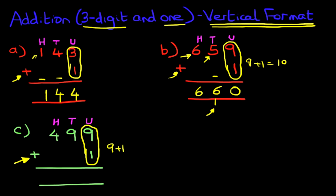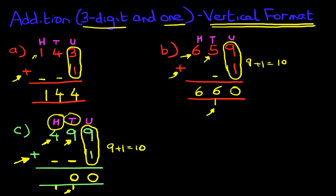We've got nine plus one again. From your number bonds, you know that equals ten. One goes here and zero goes here. Now we're going to do the tens — we've got nine here, nothing here, but we have the carried one over here; this one is part of the tens. Nine plus one is ten again — one and zero. And lastly we've got the hundreds: four plus zero plus one. Four plus one is five. So four hundred and ninety-nine plus one is five hundred.